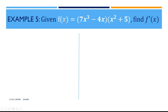Example 5: Given f(x) equal to (7x cubed minus 4x) times (x squared plus 5), find f prime of x. As discussed in the first video on basic derivatives, f(x) is equivalent to y, and f prime of x is equivalent to dy/dx. So this question is just asking us to differentiate using different notation — f(x) and f prime of x instead of y and dy/dx — but the entire solution remains the same.